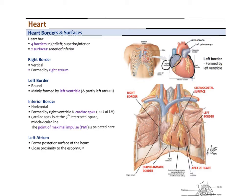The left border is more rounded due to the protrusion of the left ventricle, though part of the left atrium also contributes. The inferior border is formed by the right ventricle and the cardiac apex. The apex can be palpated or auscultated at the fifth intercostal space on the midclavicular line — drawing a line through the nipple straight down parallel to the center line of the body and hitting the fifth rib space. You can place a stethoscope there or even feel a vibration from the heartbeat.